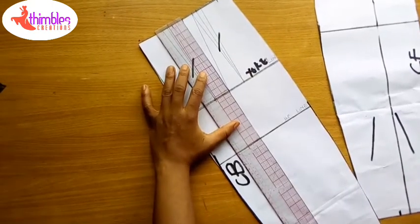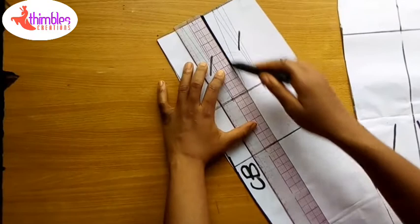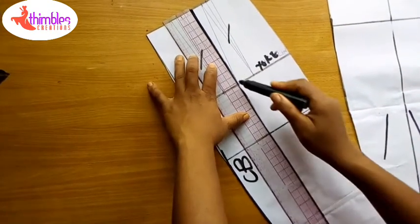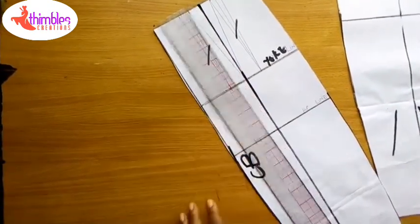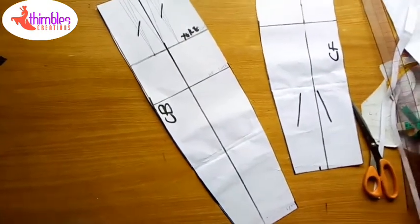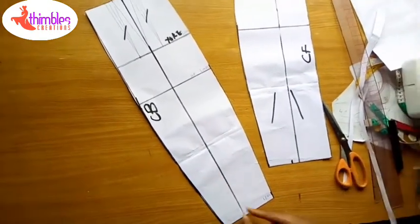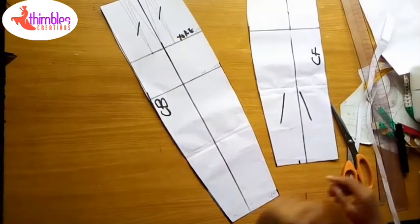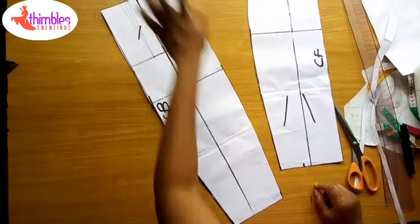I'll draw a straight line. Straight line. So now, what I'm going to do is simply to cut this place open and close the dart. Cut this place open and close the dart.